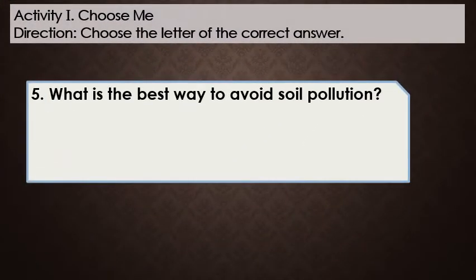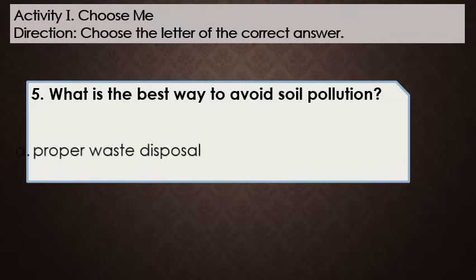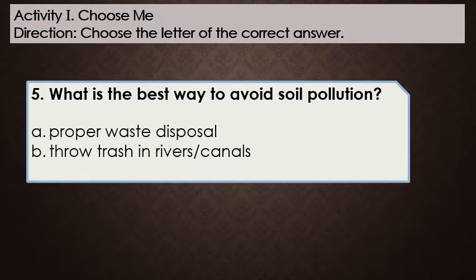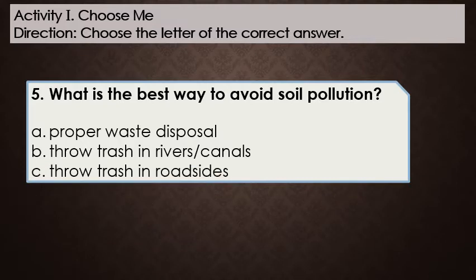Number 5: What is the best way to avoid soil pollution? A. Proper waste disposal. B. Throw trash in rivers or canals. C. Throw trash in roadsides.